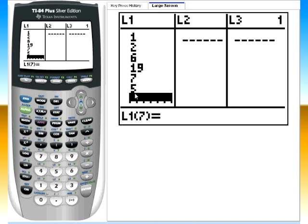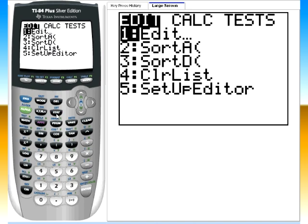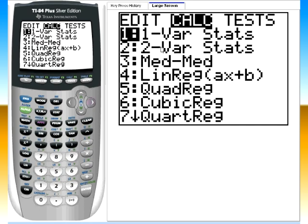Once you have these typed in, you click STAT, go over to the Calculate menu, and you want number one, One-Variable Stats. So I'm going to click one or press enter to get to that.